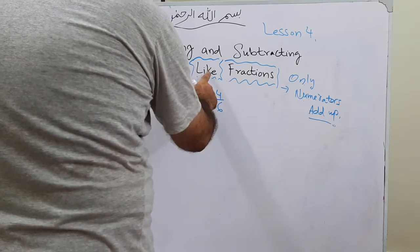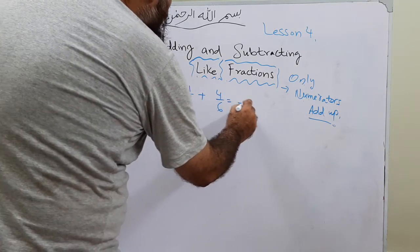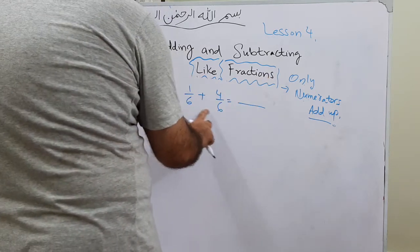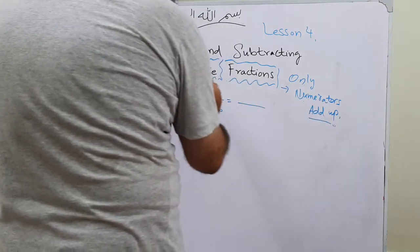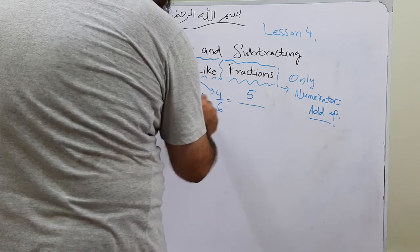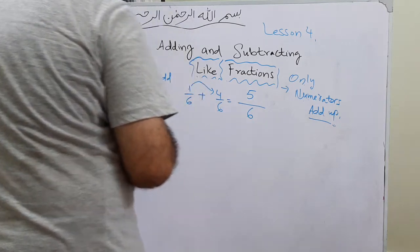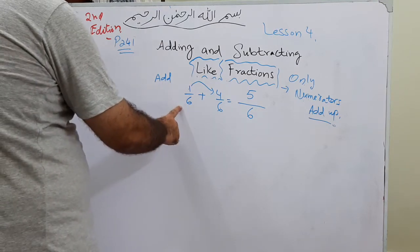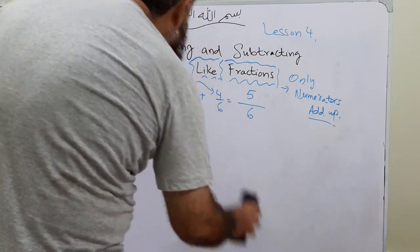The simplest rule is: when denominators are the same, only the numerators add up. So 1 plus 4 is 5, and the denominator stays the same — 5 over 6. When we add 1 over 6 and 4 over 6, we get the answer 5 over 6.